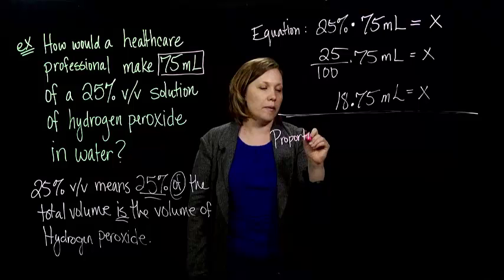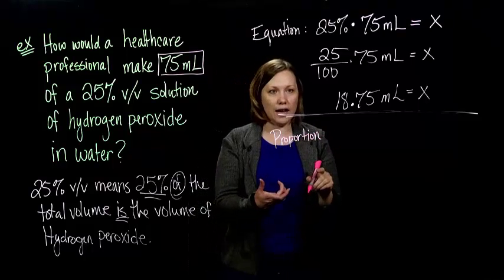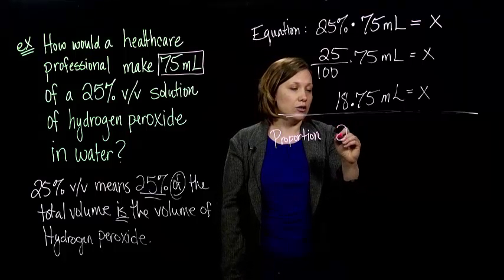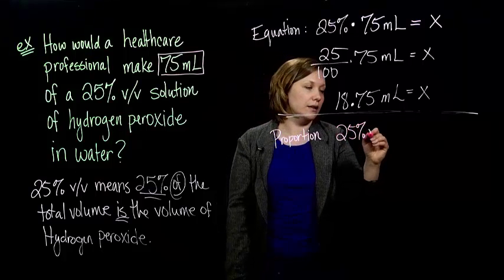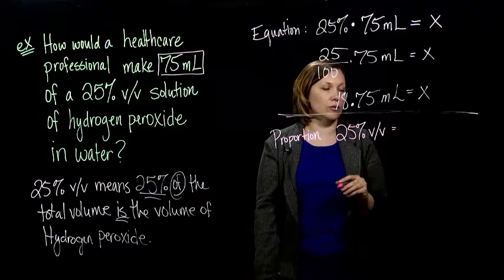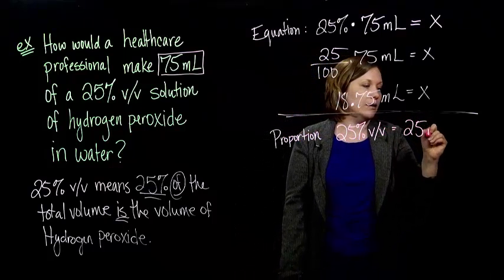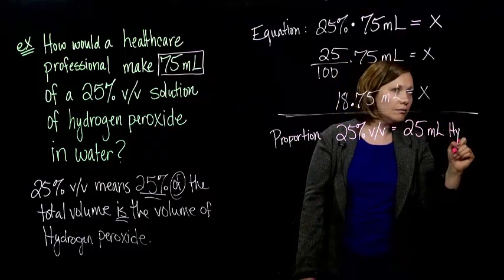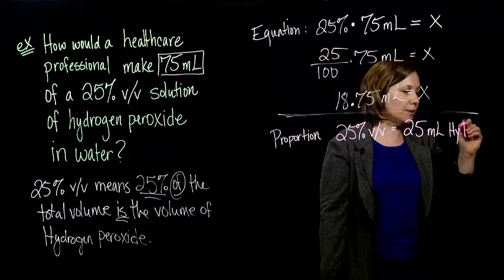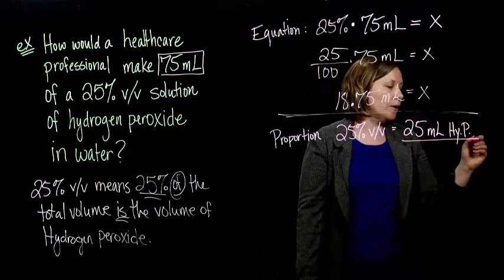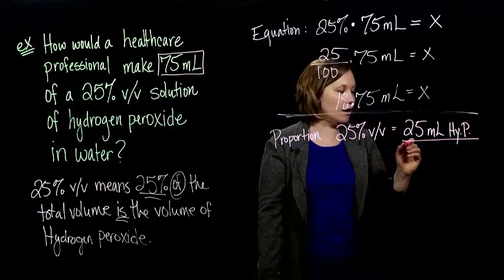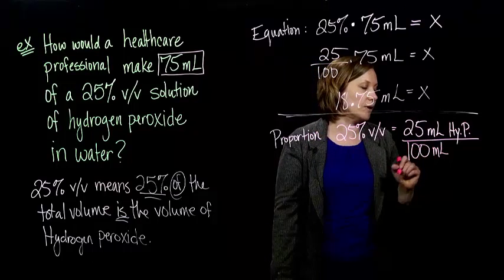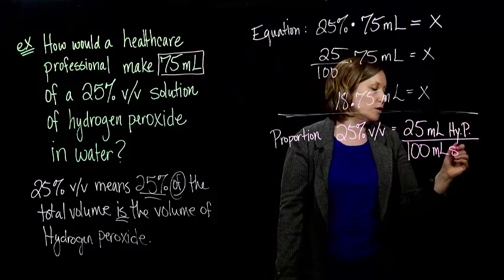So remember in the last little video I wrote down what percent volume per volume means, right? So 25% volume per volume means 25 milliliters of hydrogen peroxide. I'm going to run out of room, so I'm going to abbreviate, I hope that's okay. Per, right? The percent tells us 100, per 100, and we're talking volume again, so we're going to go with milliliters of solution.